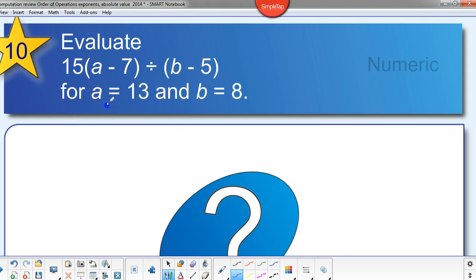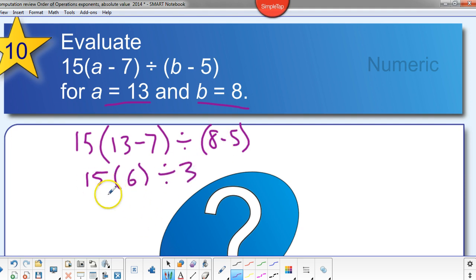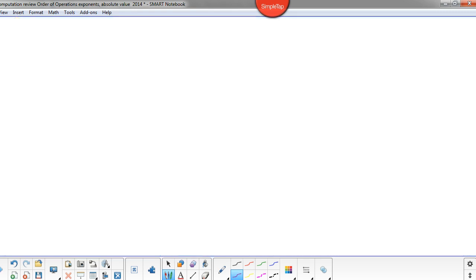Alright. Evaluate. Again. A is thirteen, B is eight. Pause this. Unpause when you got an answer. Okay. So substitute in here. And do the parentheses next. So we got fifteen times six divided by, what is that, three. Thirty. So we got fifteen times six. I'm going to go with ninety. Thirty. Very nice.